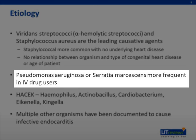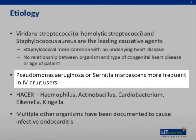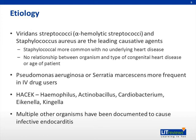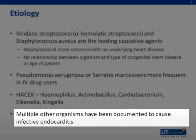Pseudomonas aeruginosa or Serratia marcescens are more frequent in IV drug users. HACEK organisms — which stands for Haemophilus, Actinobacillus, Cardiobacterium, Eikenella, and Kingella — are common in patients with congenital heart disease. They can be very difficult to grow from blood cultures and often require multiple sets. Multiple other organisms have been documented to cause infective endocarditis, so keep all organisms in mind.